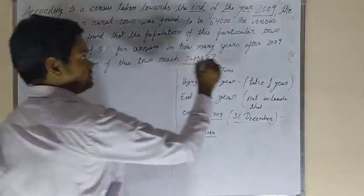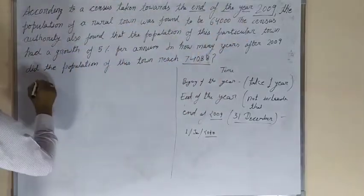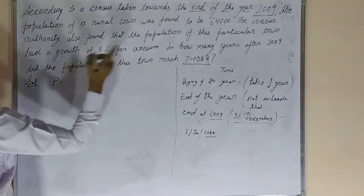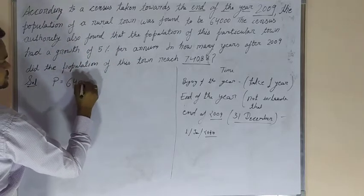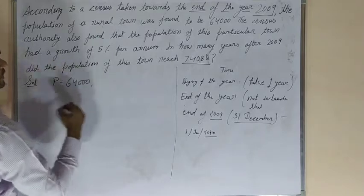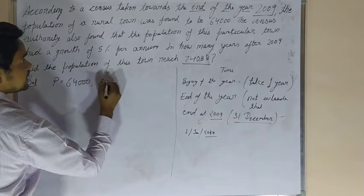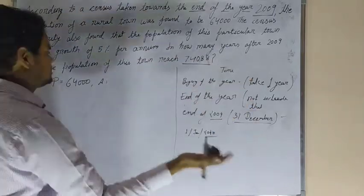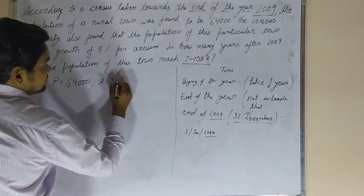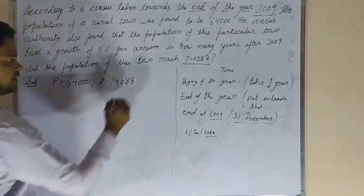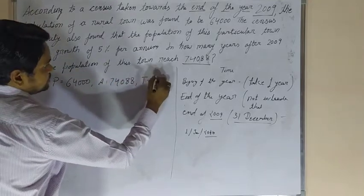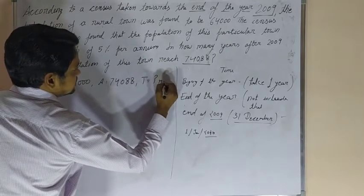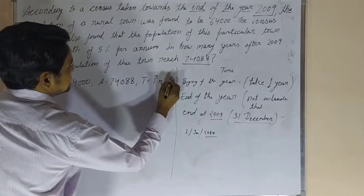Okay, now let's start the solution. P equals 64,000. A, the population after a certain number of years, is 74,088. We don't know T, and R is 5%.